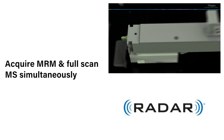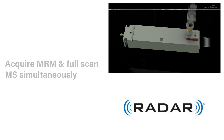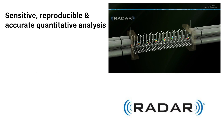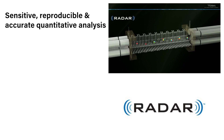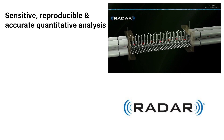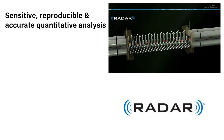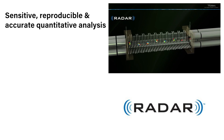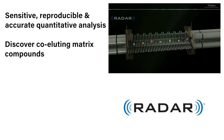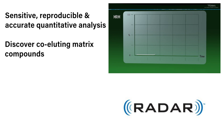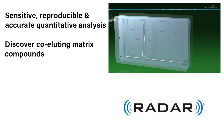With Radar, analysts have the ability to detect contaminants in samples while performing sensitive, reproducible, and accurate quantitative analysis, and discover co-eluting matrix compounds so that matrix variation between samples can be assessed and data quality increased.